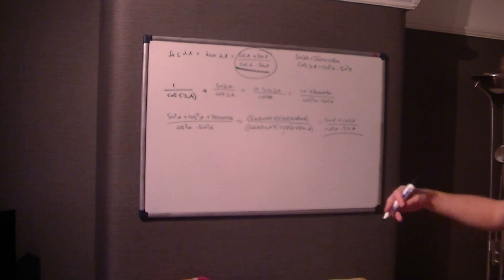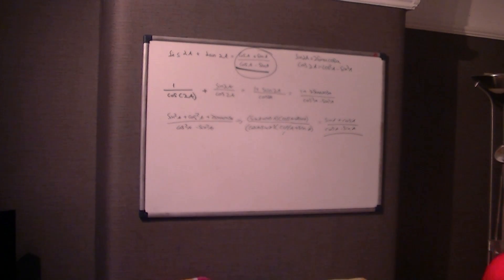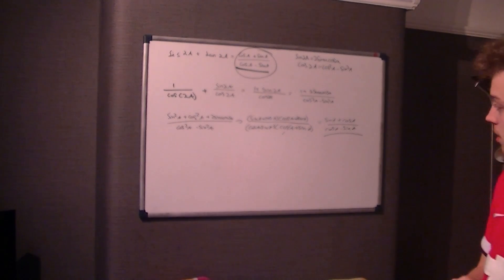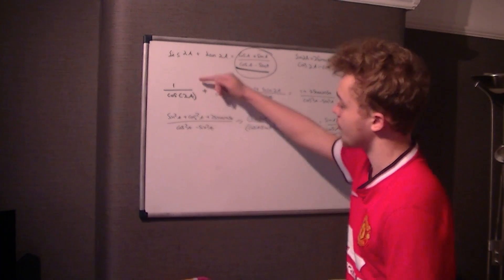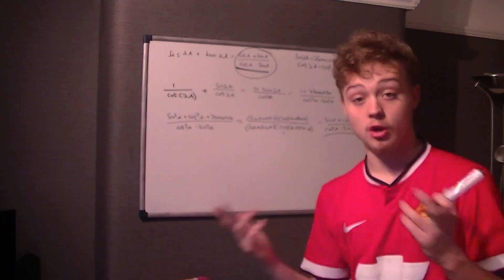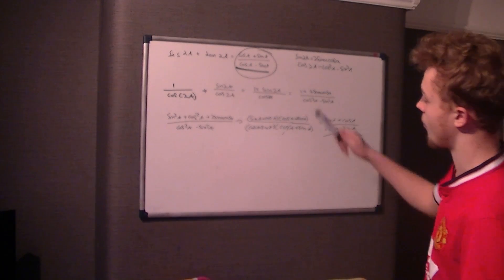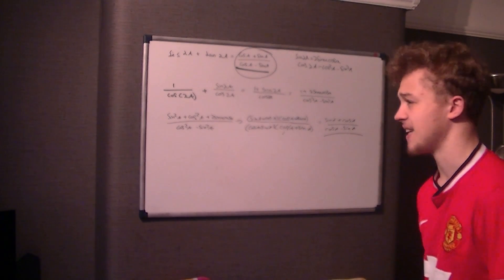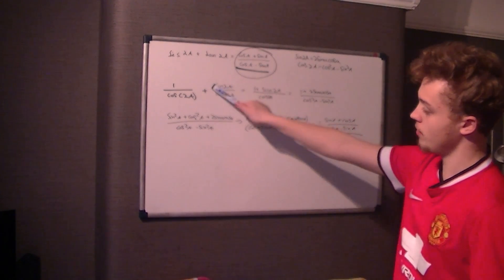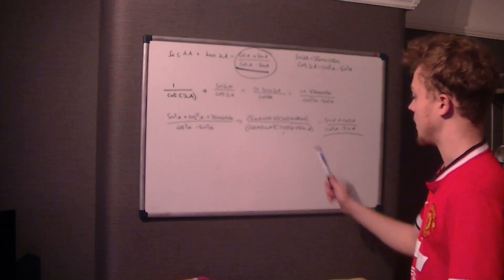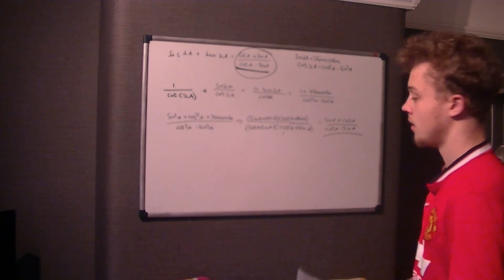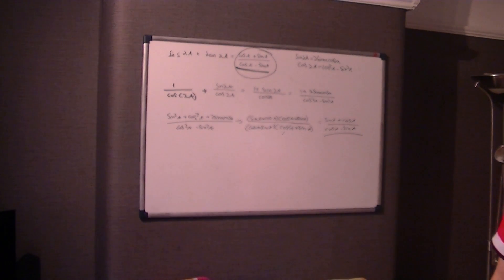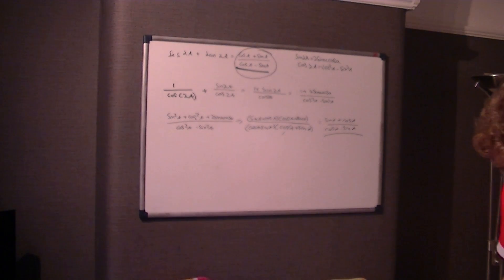That's a really nasty five-mark question. The marks are awarded as follows: one mark for writing sec 2a as 1/cos 2a and tan 2a as sin 2a / cos 2a; one mark for substituting the double angle formulas; no mark for simplifying the fraction alone; and then two marks for factorising correctly and arriving at the final answer.